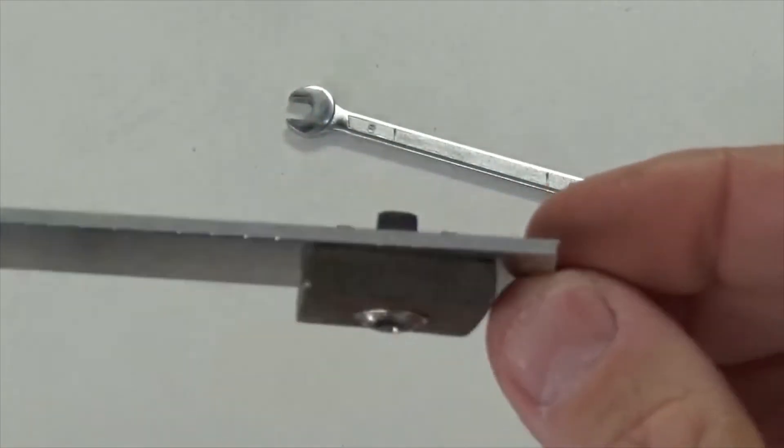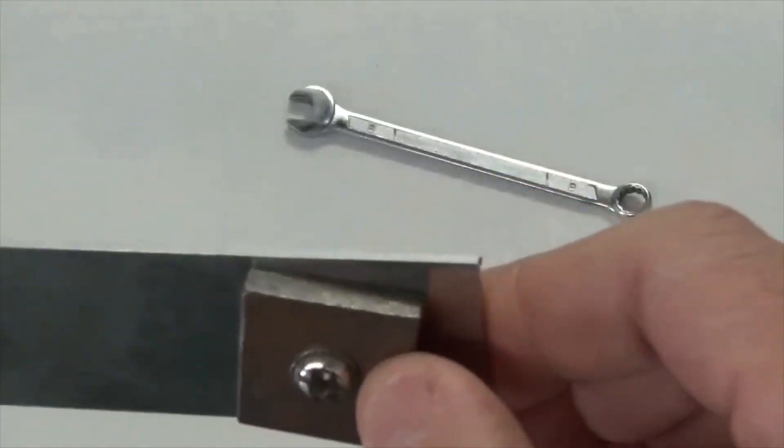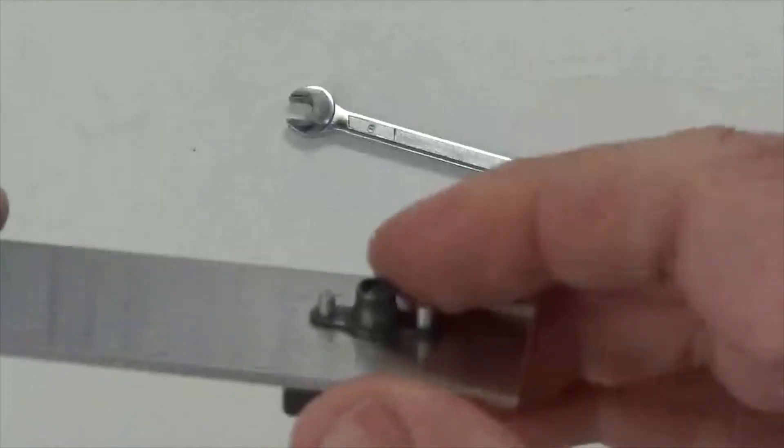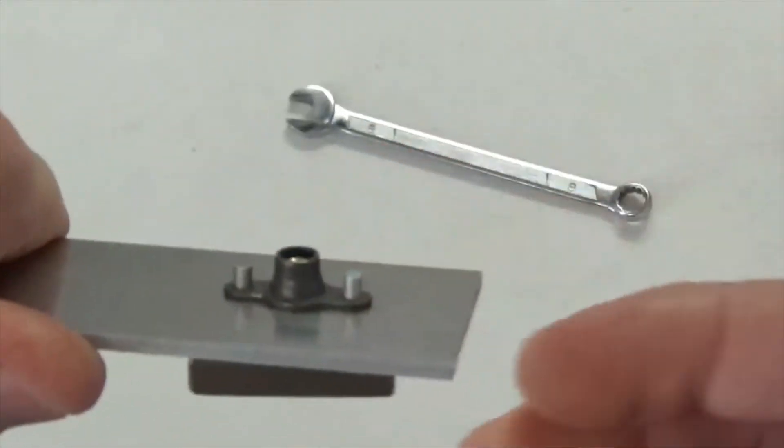So then what this does, as you can see, is you've got the plate on the bottom, the steel plate, and it's pulling the anchor nut down nice and tight, so that now is not going to go anywhere.